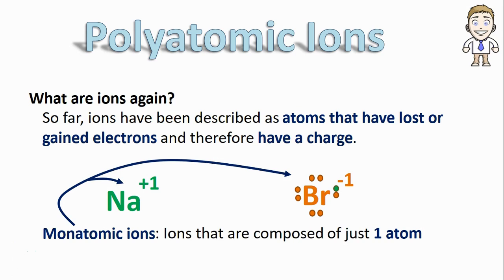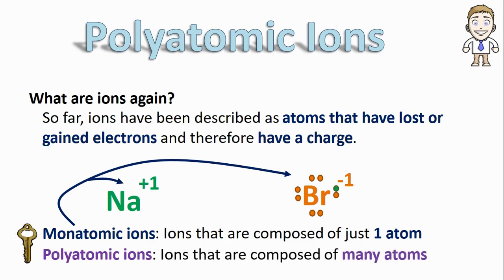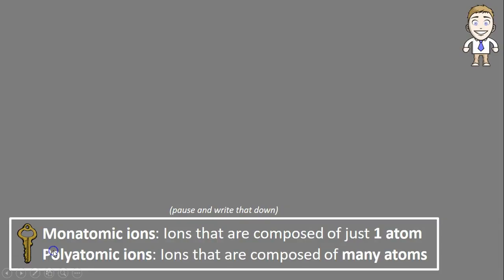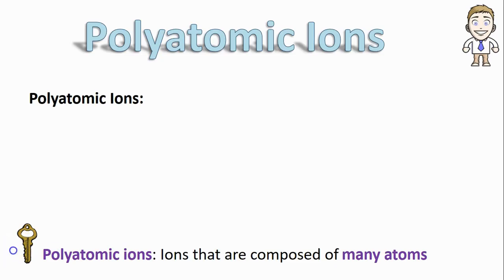But monatomic ions aren't the only type that exists. There's also polyatomic ions, which are ions that are composed of many different atoms. The prefix poly generally tells you that you're going to be talking about more than one of something. So what exactly does a polyatomic ion look like, and how can an ion be made of many atoms in the first place?